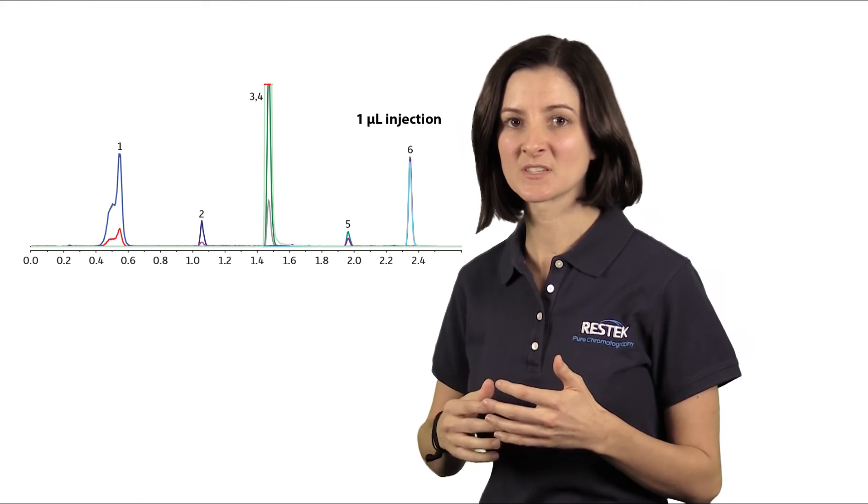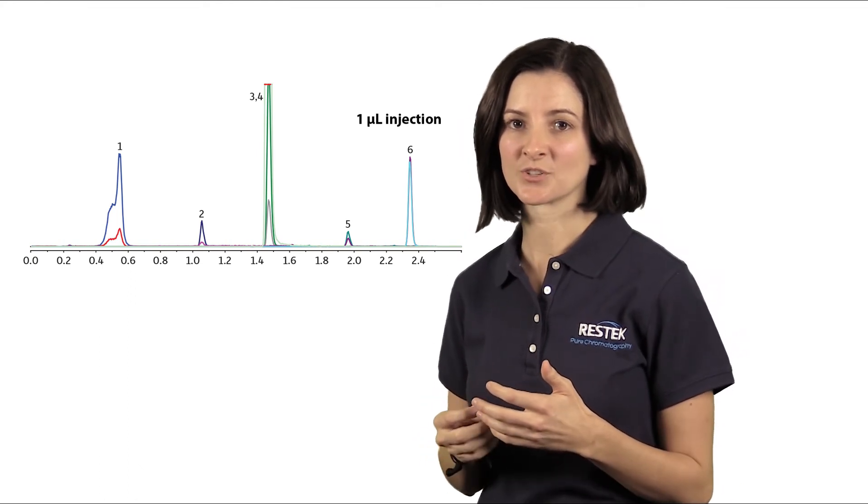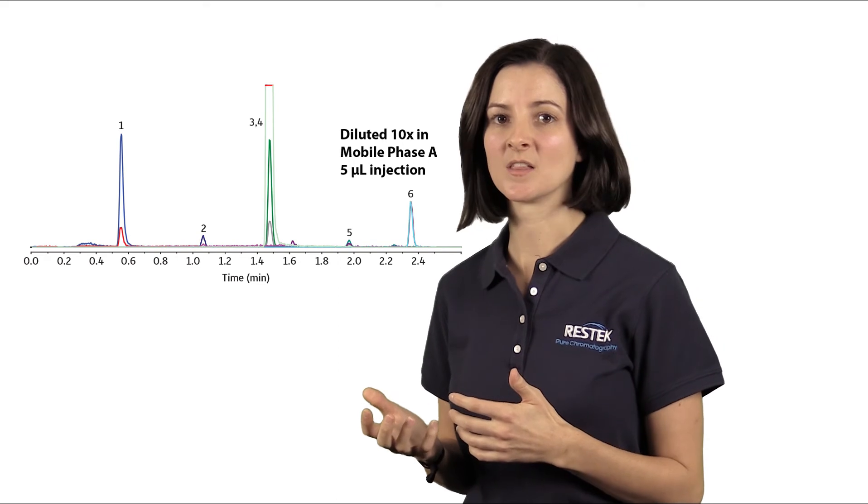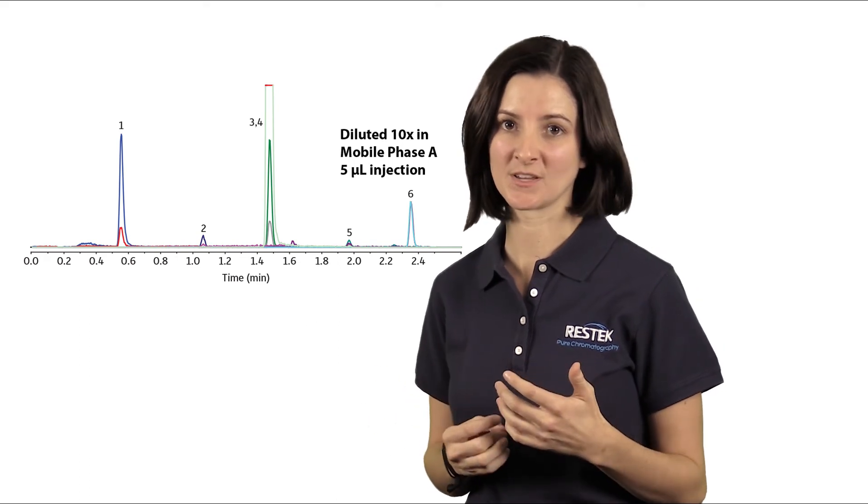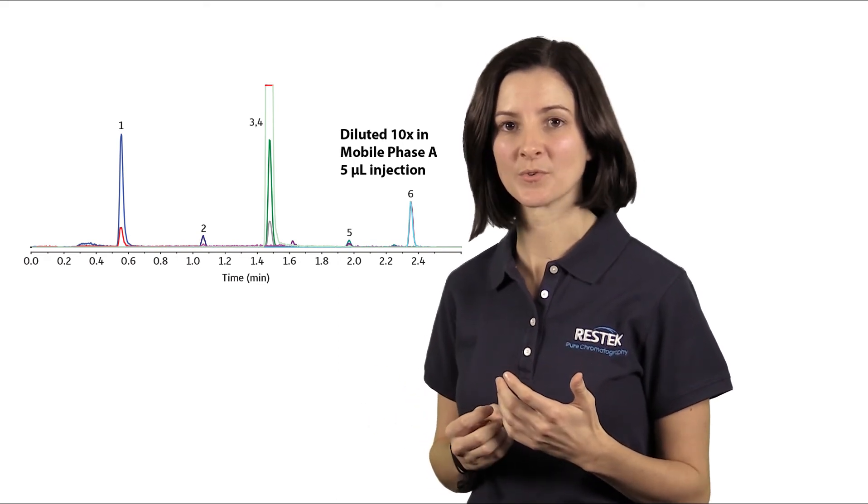Secondly, we can look at changing our sample diluent to match our initial mobile phase conditions. What this does is it avoids that sample and solvent mismatch, and we can start to inject more onto the column without seeing that peak fronting that's indicative of the sample overload.